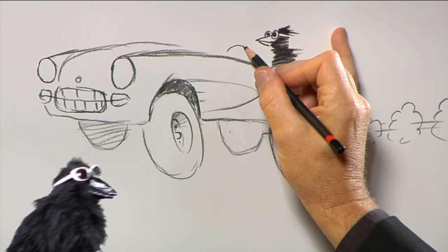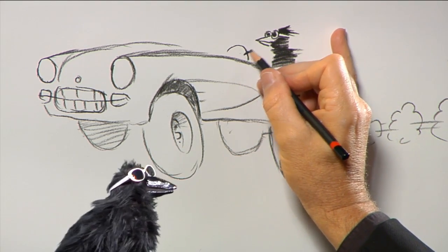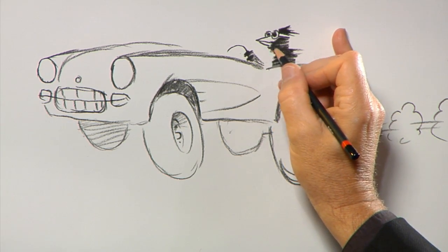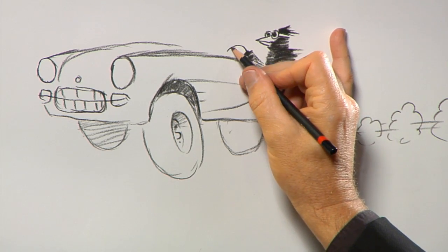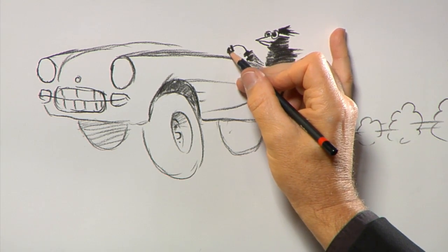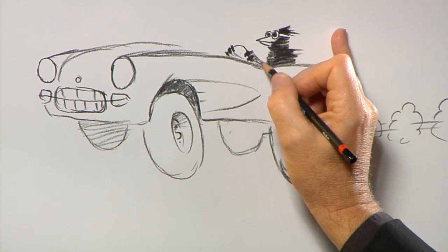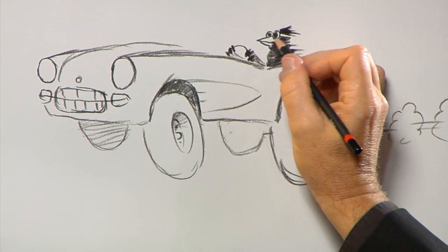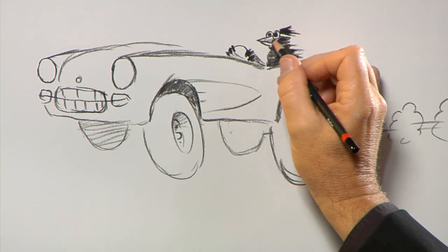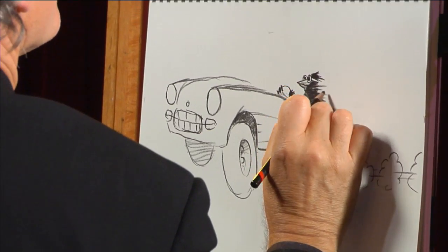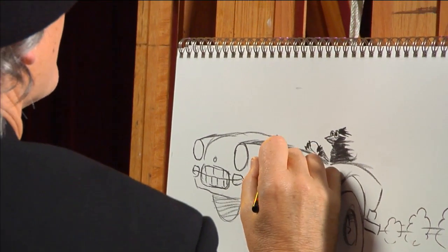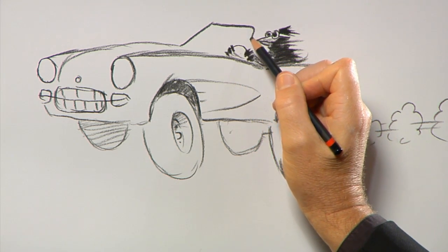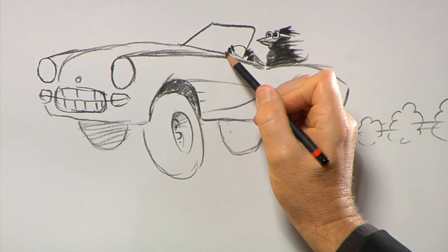Now, birds don't really have fingers. Sorry, Ray. But we can make the wing feathers come up and look sort of like fingers. And that's how he holds onto the steering wheel. Yeah, looks like he's driving. Maybe a little color in the beak. Now we can put in the windshield, since we know where the driver is sitting.